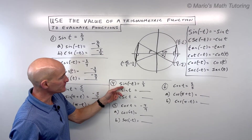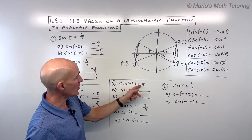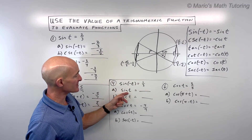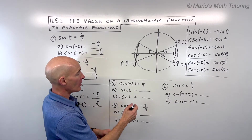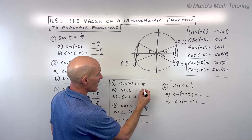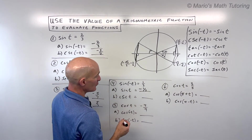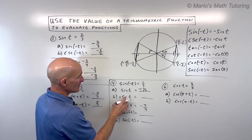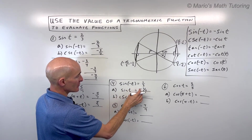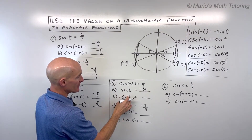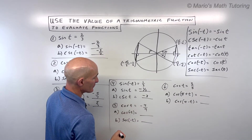For number 4: sine of negative t is one third. What's the sine of positive t? Remember, sine is odd, so it's going to be the opposite: negative one third. And cosecant of t is the reciprocal of sine of t — flip that over — so that's going to be negative 3.